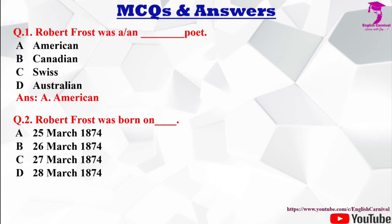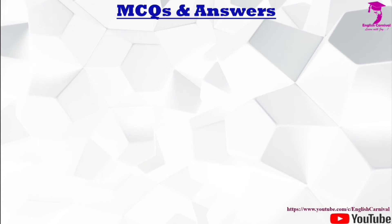Question number 2: Robert Frost was born on ___. Options: A) 25th March 1874, B) 26th March 1874, C) 27th March 1874, D) 28th March 1874. The correct answer is B — he was born on 26th March 1874.